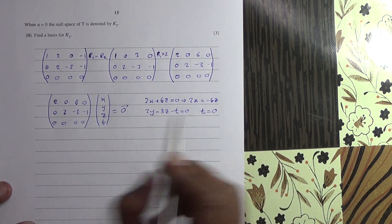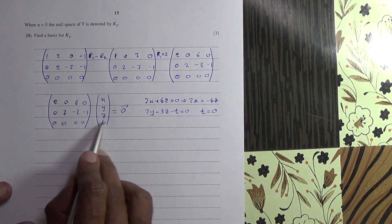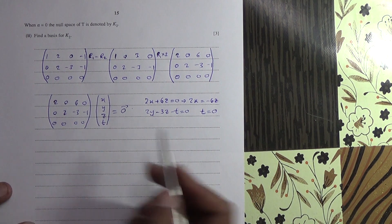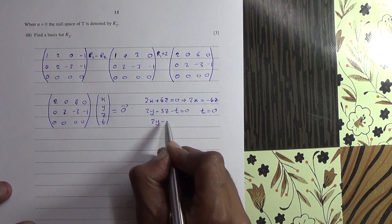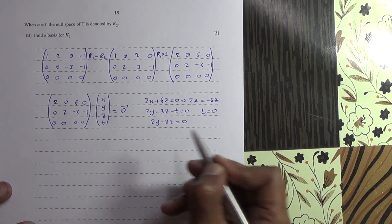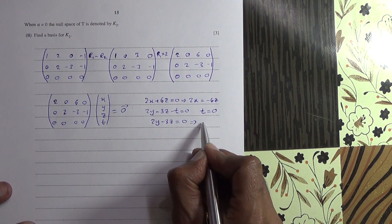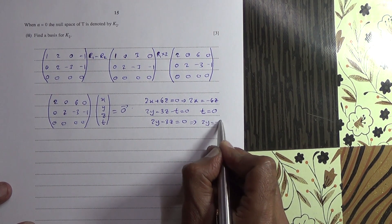We know that t is equal to 0 from here. All of that is equal to 0. So one value of t could be 0 here. Therefore, I've got 2y minus 3z is equal to 0, meaning that 2y is equal to 3z.